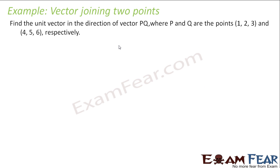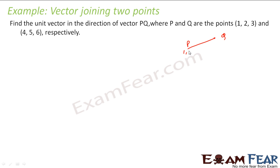Let's take one more example. We have to find the unit vector in the direction PQ, where PQ points are given. I have P as (1, 2, 3) and Q as (4, 5, 6).